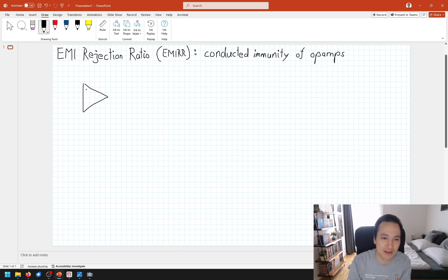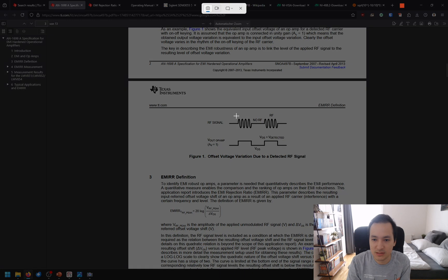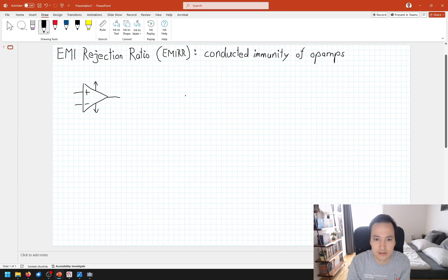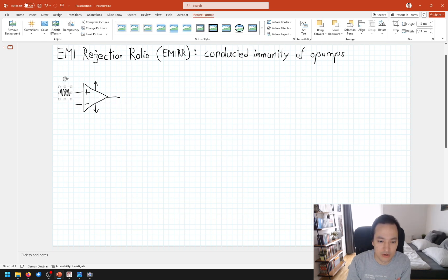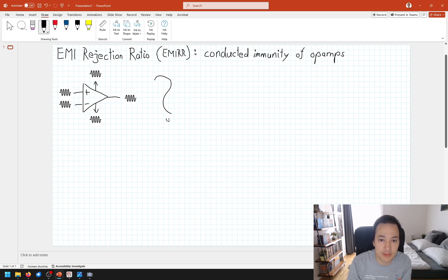If we think about an operational amplifier, here we have the plus input, here we have the minus input, then here we have our output and we also supply our op amp. What happens if we apply an RF signal here to our inputs? We can apply an RF signal at our plus input, at our minus input. We could also inject an RF interference to our supply pins, but also to our output. So what will happen now? Let's simplify our problem and just imagine we apply an RF signal only to our plus input and connect our op amp as a buffer. The interesting thing is that we will see a DC output voltage here at our output. It's like an offset.